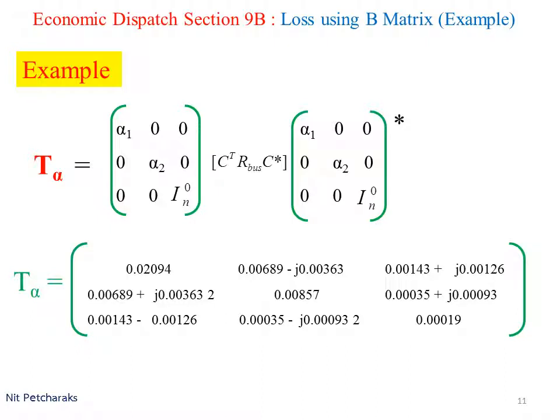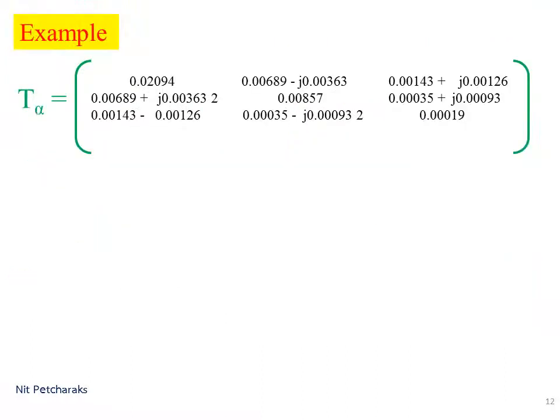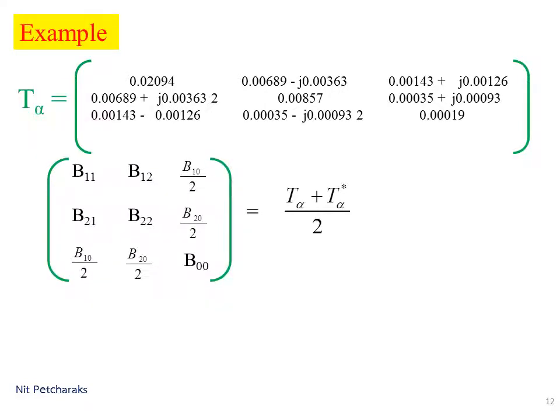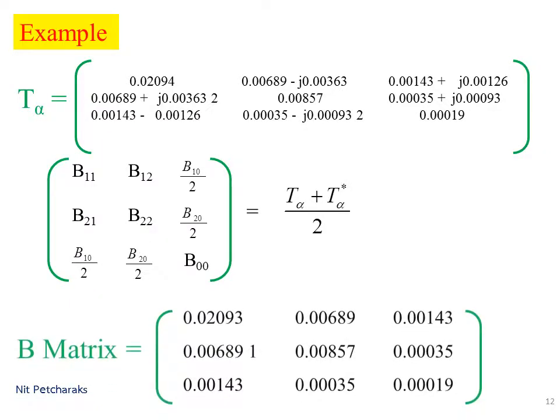Calculate T-alpha. Calculate B-metrics, which is the average value of T-alpha and T-alpha conjugate.